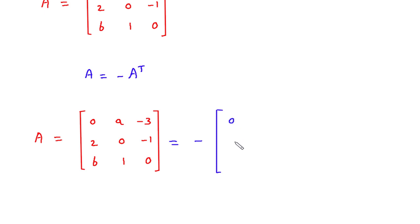0, a, then minus 3 and this will be 2, 0, minus 1, then this will be b, 1, 0.